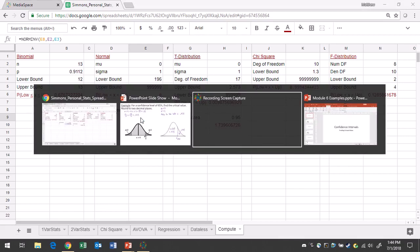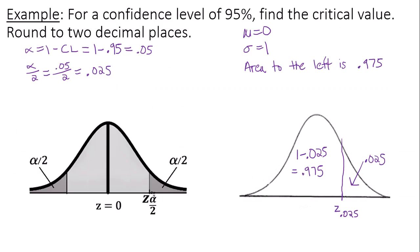So my critical value in this case, z sub alpha over 2, is 1.96. This is actually a common critical value used in statistics. 95% confidence levels are very popular, so 1.96 is our answer. Thanks for watching.